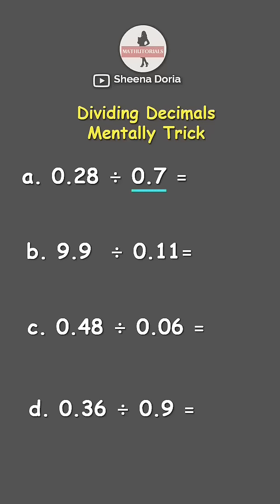So here our divisor is 0.7. So let's move the decimal point. There you go. So this becomes 7.